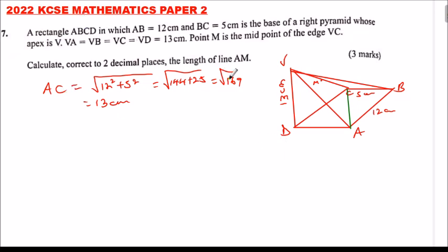Then we need to get this line here, the blue line which is AM. Note that since this is an equilateral triangle ACV—this is 13 cm, this is 13 cm, and the whole of this is 13 cm—it means AM is the perpendicular bisector of the triangle, so angle AMC is a right angle.